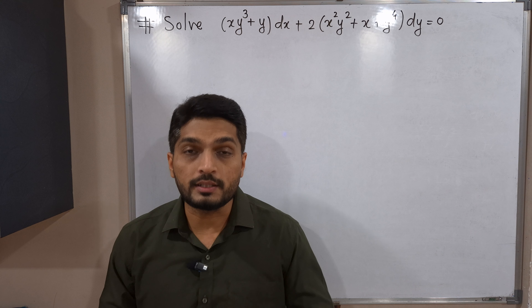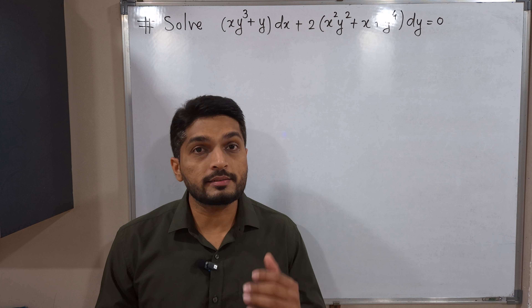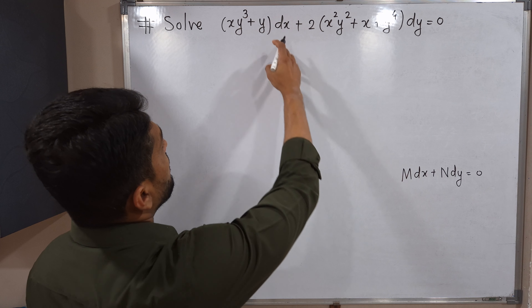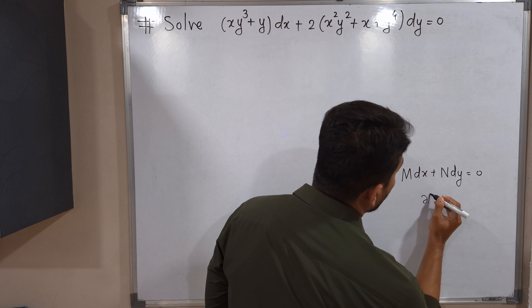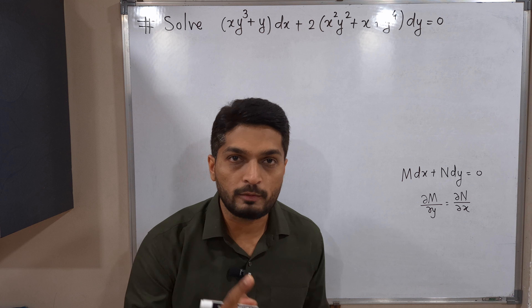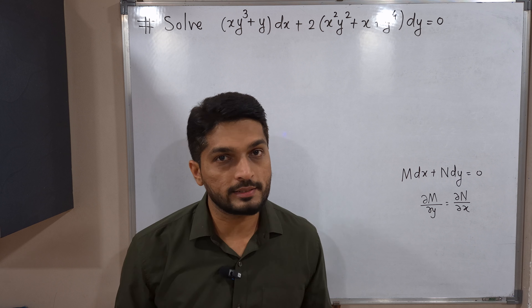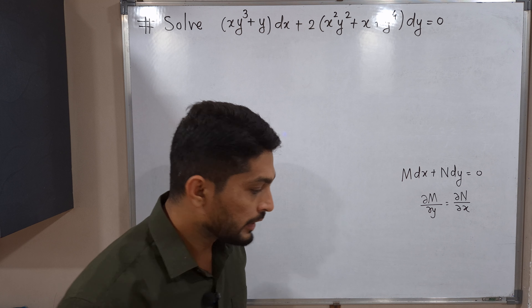In today's video we are going to solve an example to discuss: if the given differential equation is non-exact, how to find its solution. Before starting, let us recall a few things. When we say the differential equation M dx + N dy = 0 is exact, the partial derivative of M with respect to y must equal the partial derivative of N with respect to x. Otherwise it is non-exact.